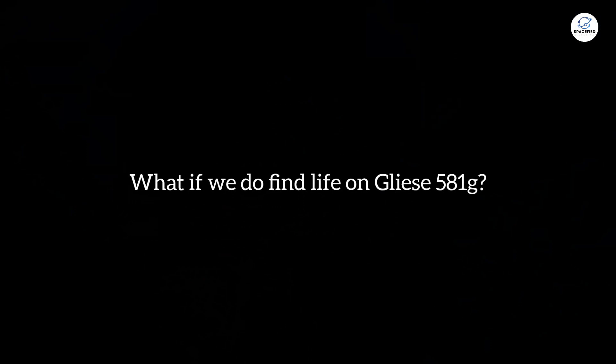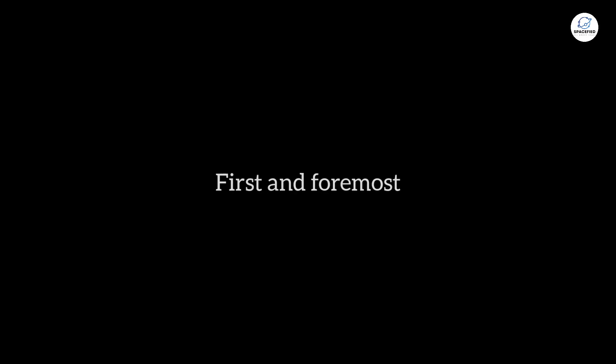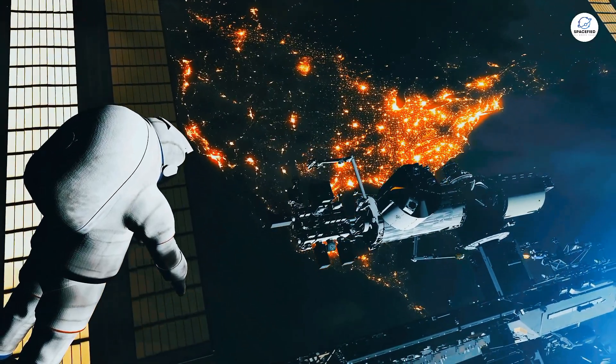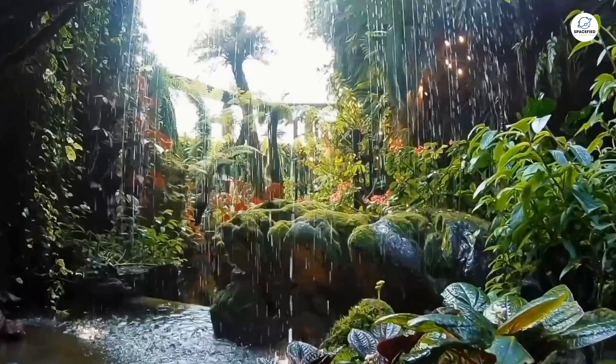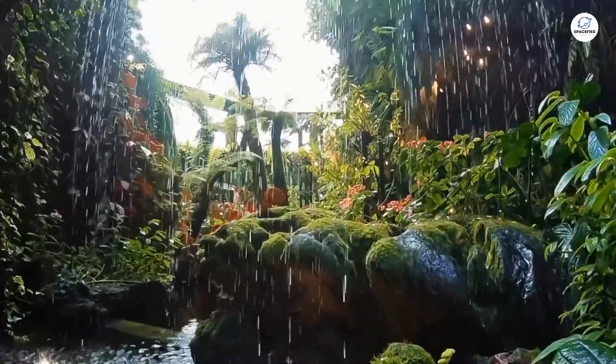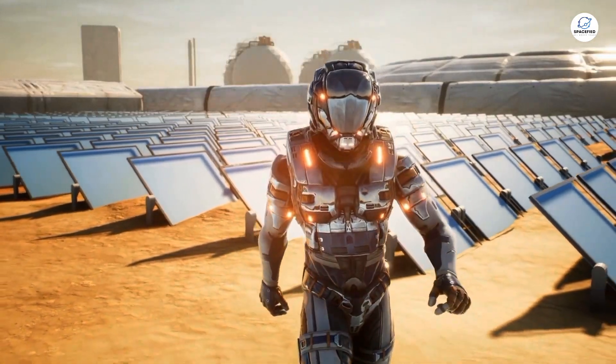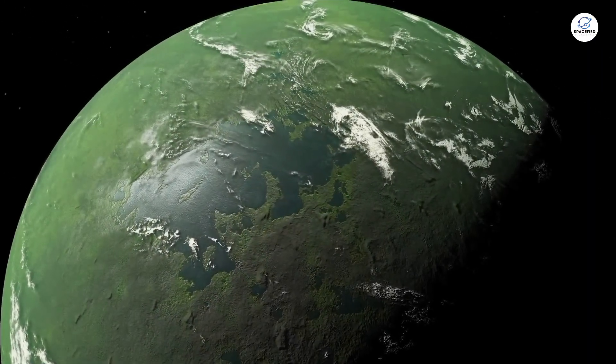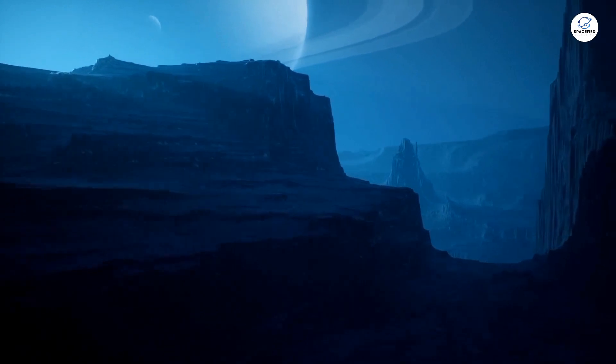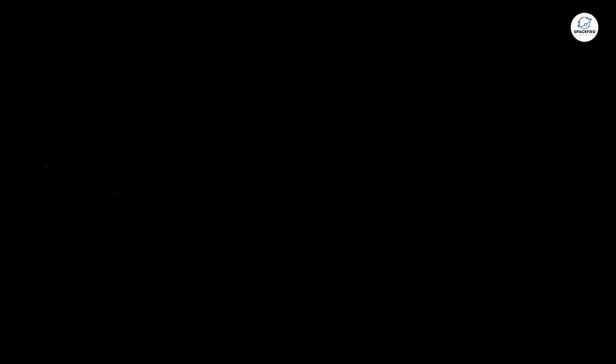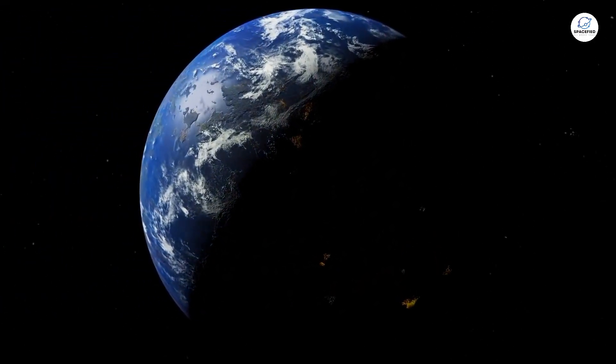What if we do find life on Gliese 581g? What would that mean for humanity? First and foremost, it would mean that we are not alone in the universe, a discovery that would fundamentally change our understanding of life, the universe, and our place in it. It would also raise new questions about the nature of life. Would the life forms on Gliese 581g be similar to those on Earth? Or would they be completely alien? And what if the planet is even more habitable than Earth? Could it one day become a destination for human colonization? Imagine a future where humanity spreads out across the stars with Gliese 581g as our first stop.